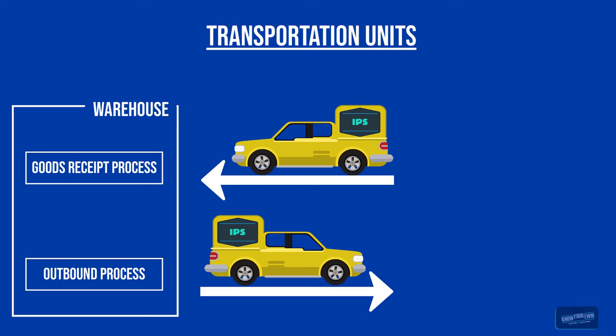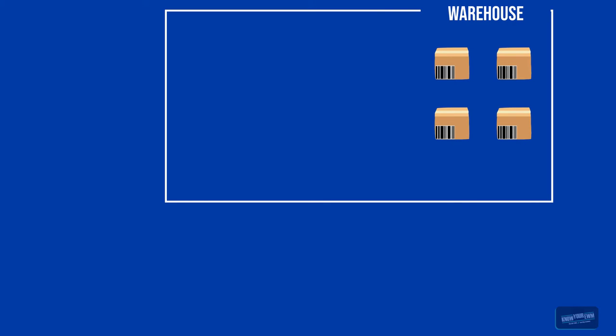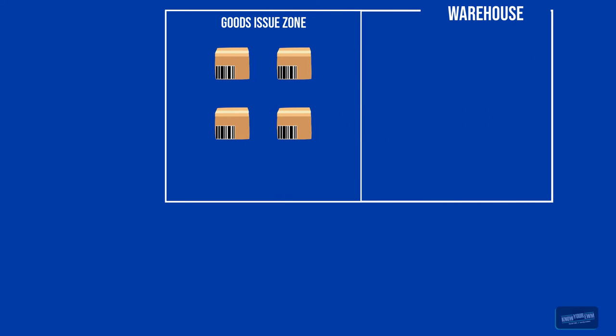In order to understand how such a transportation unit works, let us check out a small example. Let us assume the International Parcel Service picks up the goods from our warehouse at 5 pm. You would perform your picking and packing process during the day and store the finished handling units in the goods issue zone, waiting for them to get picked up by the parcel service.